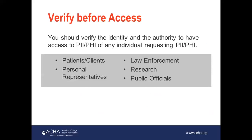When giving any sort of protected information to someone outside of our own healthcare record system, we have an obligation to verify the identity and the authority of that person to have access to those records. That will include patients and clients, personal representatives of those patients or clients including family members and parents, law enforcement, individuals doing research on healthcare records, or public officials. We must verify the identity and be sure that the person has in fact been granted authority to access those records before we release.